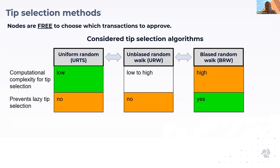The biased random walk is computationally much more heavy because you have to perform algorithms to count how much weight is pulled on top of a transaction. But it does prevent lazy tip selection.